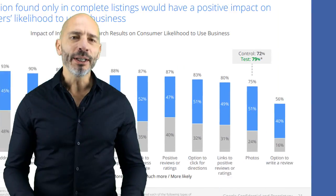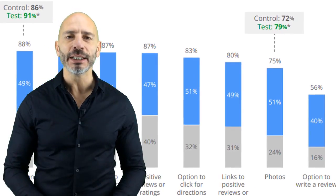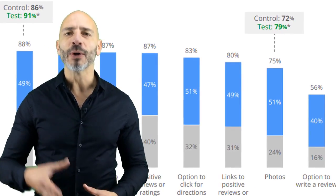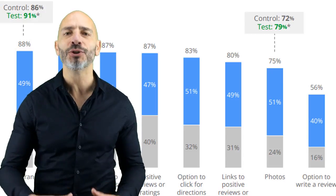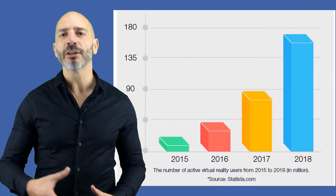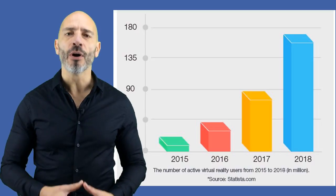So why on earth should you bother posting 360 degree photos on your Facebook business page and in Google My Business instead of a good old-fashioned photo? According to a study commissioned by Google in 2015, listings with photos and a virtual tour are twice as likely to generate interest. Another study from Statista.com shows the number of virtual reality users keeps on growing. These two arguments alone are enough to justify using 360 degree photos as part of your strategy. But the best part is you don't need to buy any fancy equipment — you can use your phone and a free Google app to do this.